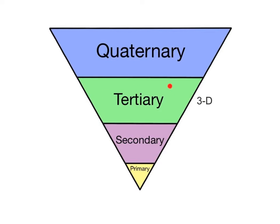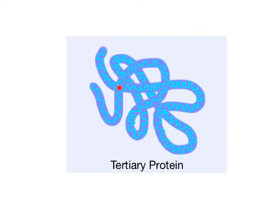The tertiary or third order structure of a protein is the overall folding pattern of the polypeptide chain that produces the protein's unique three-dimensional shape. The protein-specific tertiary folding pattern is what determines how it will function in the cell. This more intricate folding brings amino acids that are located far away from each other on the polypeptide closer together.